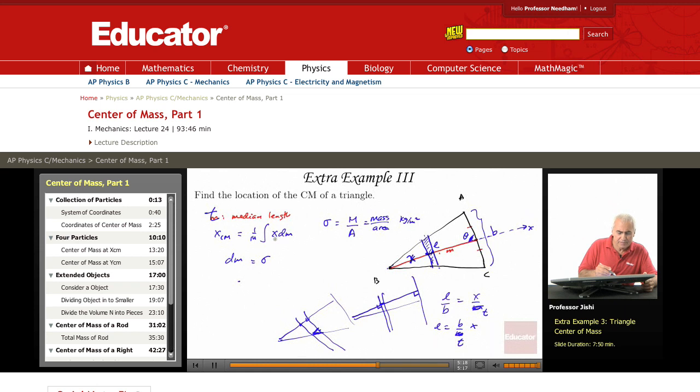So the area is length, which is b over t dx, times the height, which is dx sine theta. This is dm.